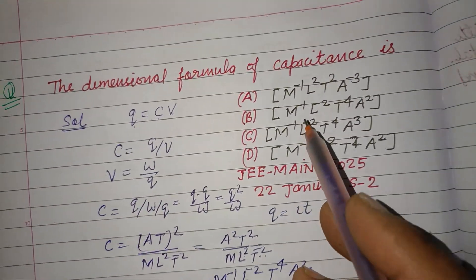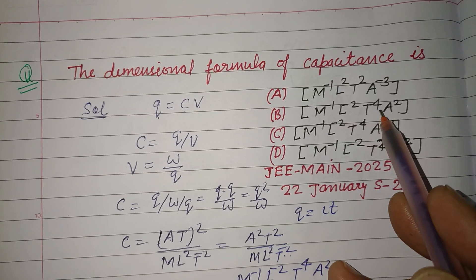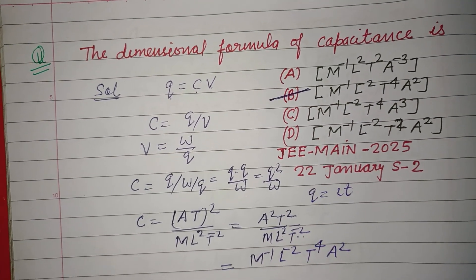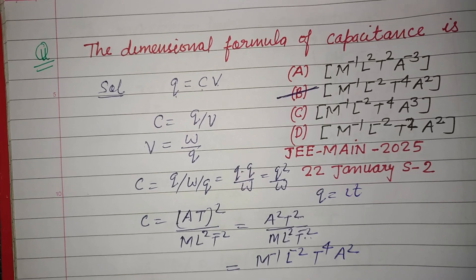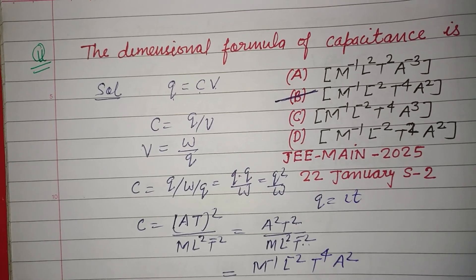So M minus 1, L minus 2, T 4, A 2 is the correct answer of this question. I hope you got it. Please like the video, subscribe the channel. Thanks for watching.